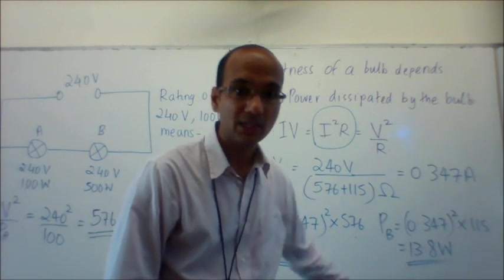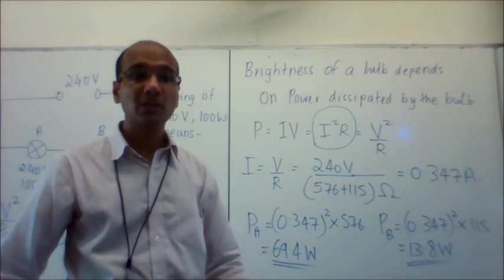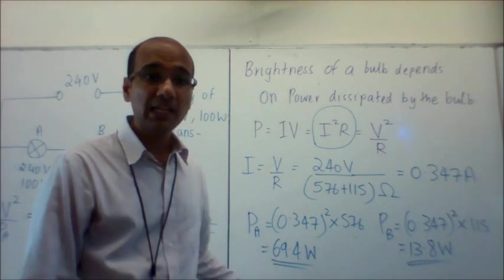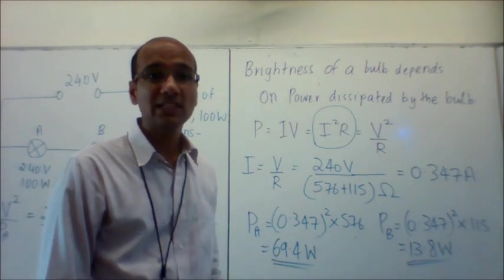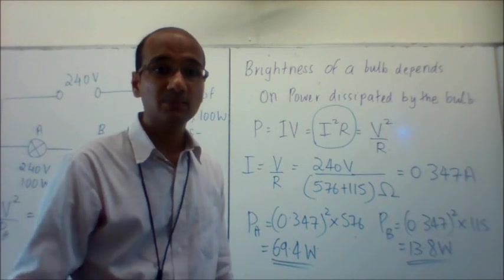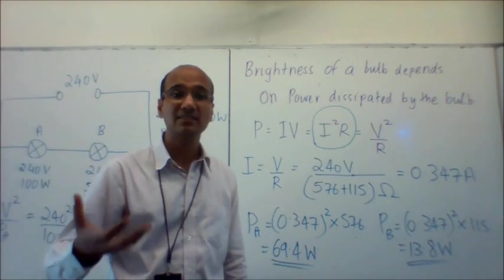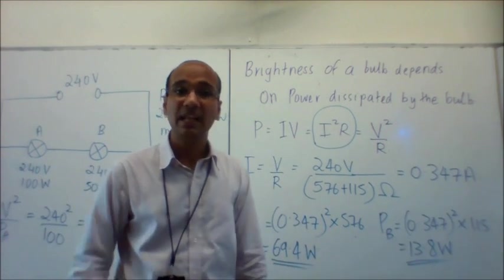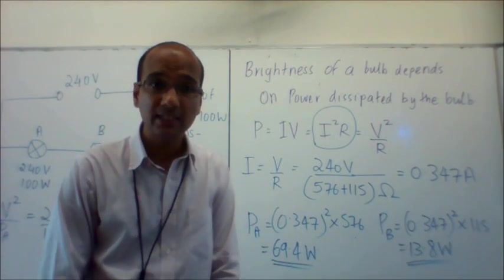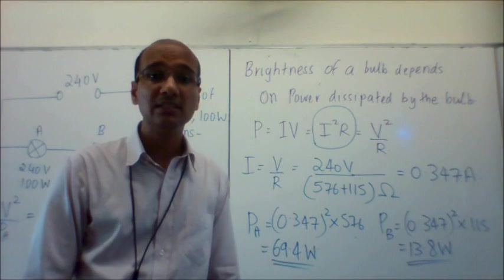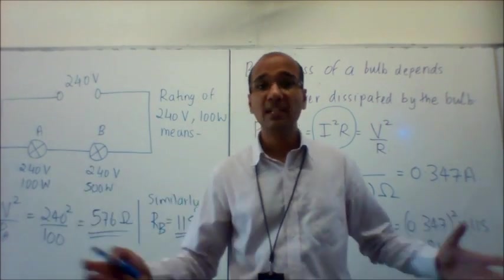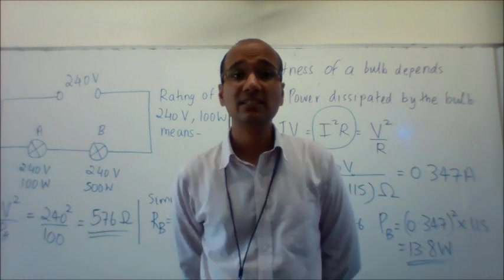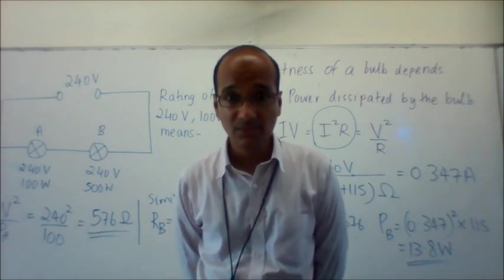which gives 13.8 watts. From these numbers, it's clear that bulb A dissipates more power, which means it will be the brighter bulb. Bulb B does not dissipate as much power as bulb A, and therefore it will be the dimmer bulb. I hope this video was useful in helping you understand how to do brightness comparison problems.